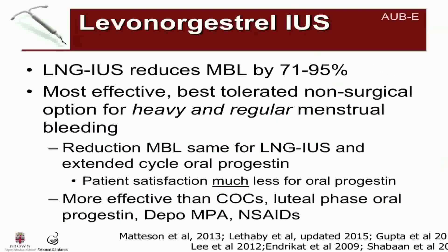Studies have shown that the levonorgestrel intrauterine system reduces menstrual blood loss by 71 to 95 percent. In terms of reducing menstrual blood loss, it's the most effective, best tolerated non-surgical option for heavy and regular menstrual bleeding. One small study showed that the reduction of menstrual blood loss is the same for the levonorgestrel intrauterine system and extended cycle oral progestins, but that patient satisfaction was much less for the oral progestin group. Head-to-head studies have shown it's more effective than combined oral contraceptives, luteal phase oral progestins, depo-medroxyprogesterone acetate, and non-steroidal anti-inflammatories.